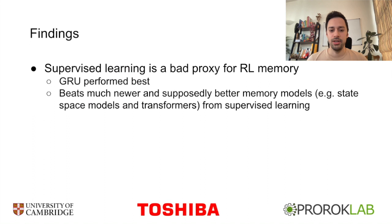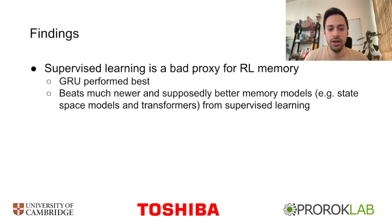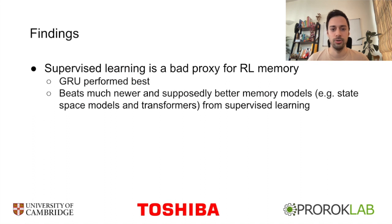One of our most surprising findings was that supervised learning is actually a really poor proxy for RL performance. We found the GRU performed best on average, and it was also robust across task domains. The GRU and other simple and old RNNs, like LSTM or LMAN networks, beat much newer and supposedly better models from supervised learning, such as state-space models and transformers.